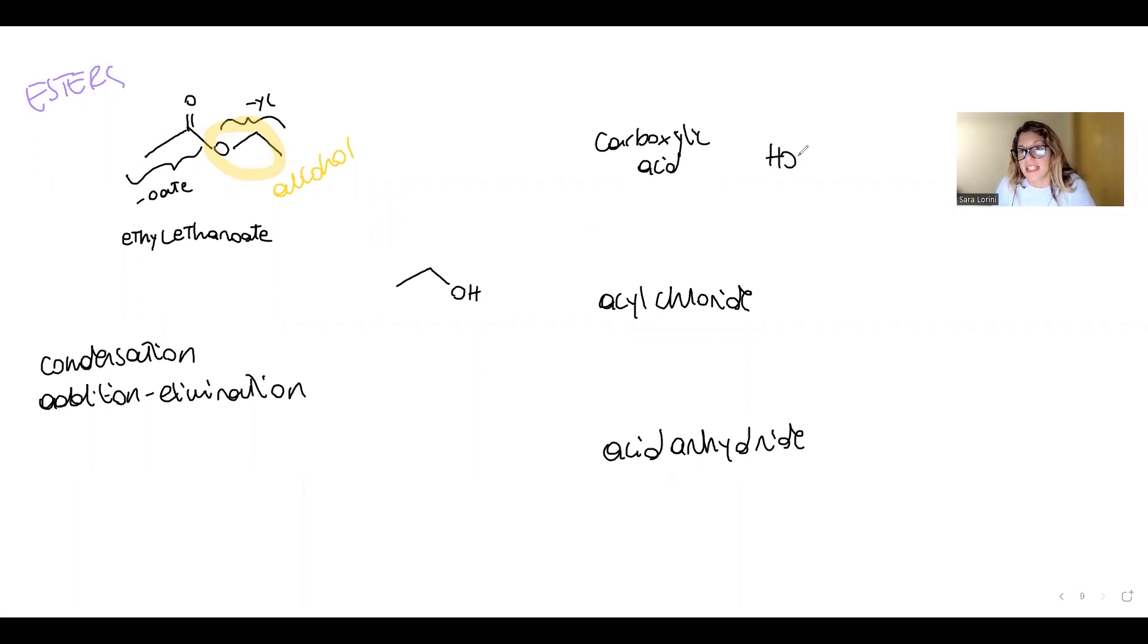They would all have two carbons. So we would have ethanoic acid, or the acyl chloride version of it, or the acid anhydride version. The acid anhydride, remember, has this functional group with oxygen and then another double bond. This part of the ester would come from this. You can see it's common for all of them.